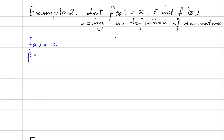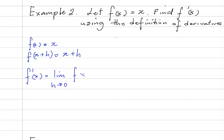So f of x plus h would be equal to x plus h. So f of x plus h is saying that in f, wherever we see x, we should take out x and put x plus h. Now, by definition, f prime of x is equal to the limit as h approaches 0 of f of x plus h minus f of x, all over h.